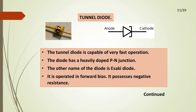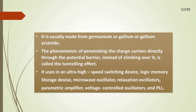Tunnel Diode. The tunnel diode is capable of very fast operation. The diode has a heavily doped PN junction. Its other name is Esaki diode. It is operated in forward bias and possesses negative resistance. It is usually made from germanium, gallium, or gallium arsenide. The phenomenon of charge carriers penetrating directly through the potential barrier, instead of climbing over it, is called the tunneling effect.